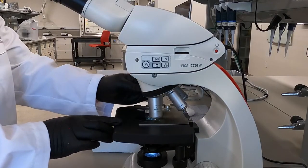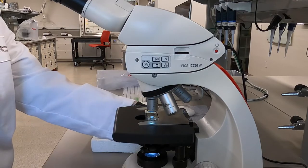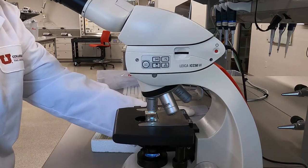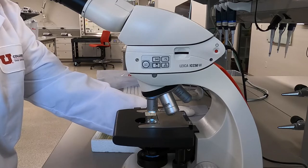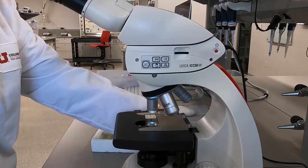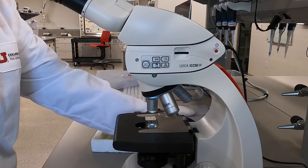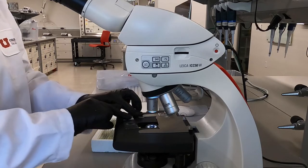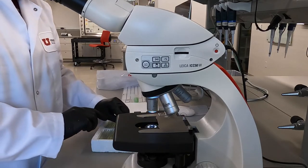If you need to change slides, use the coarse adjustment knob to lower the stage all the way. Switch to the 10x objective, or your microscope's lowest powered objective lens, and remove the slide. At this point, restart the process described for finding and focusing on your sample.